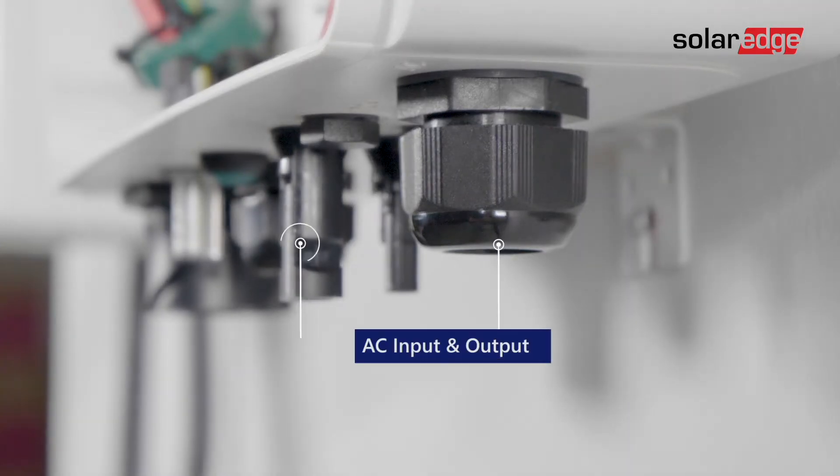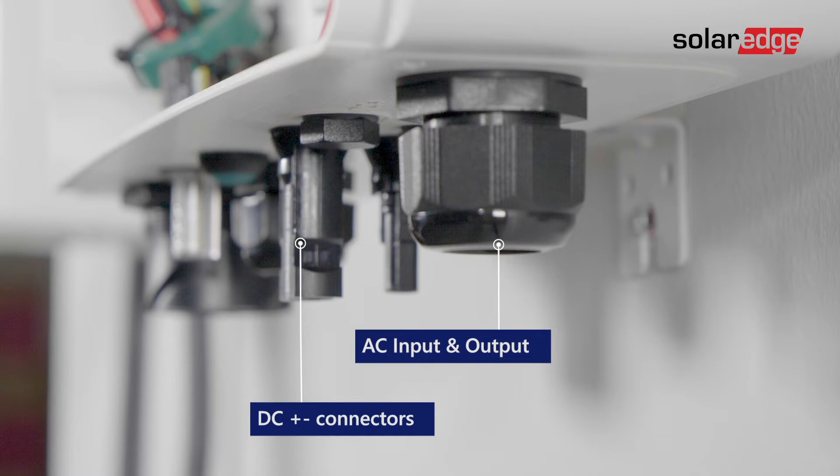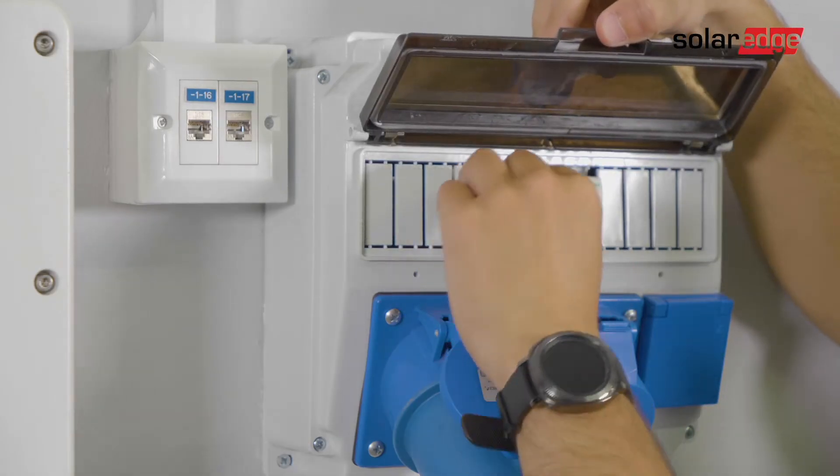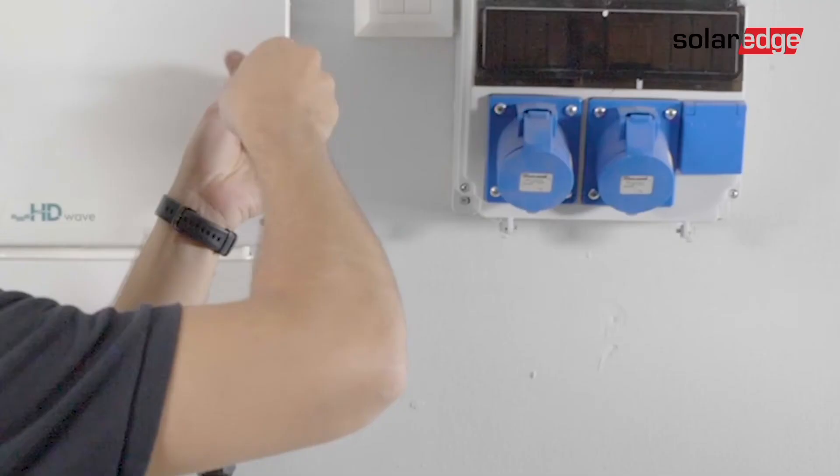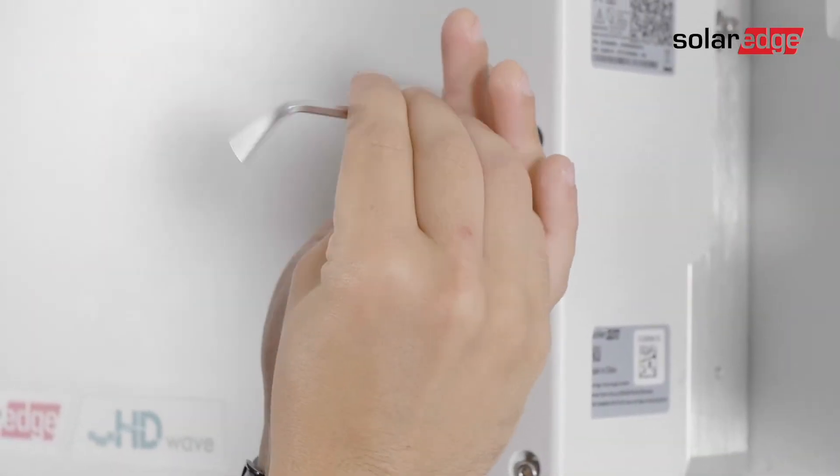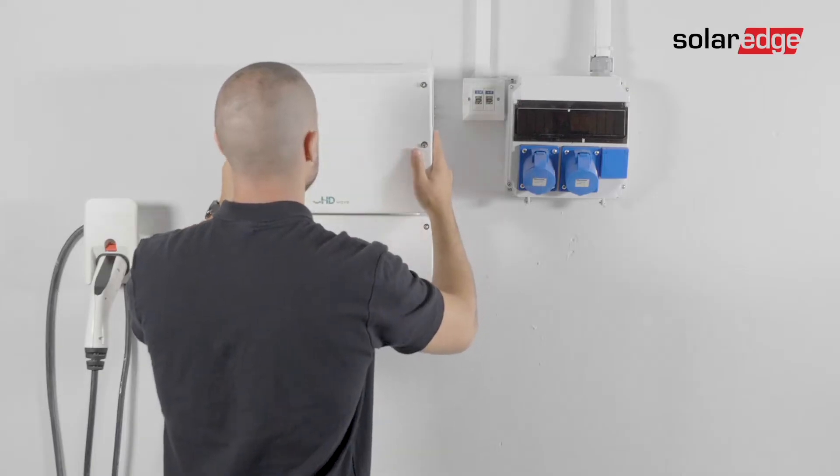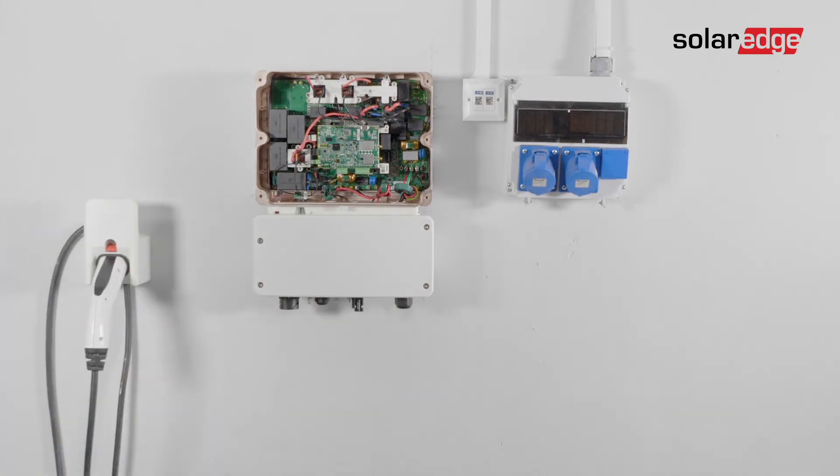Now let's connect the AC and the DC strings to the connection unit. To connect AC grid and grounding turn off the AC circuit breaker. Open the inverter and the connection unit cover by releasing the allen screws. Carefully move the cover horizontally before lowering it.